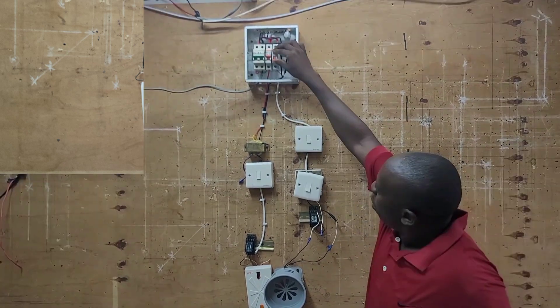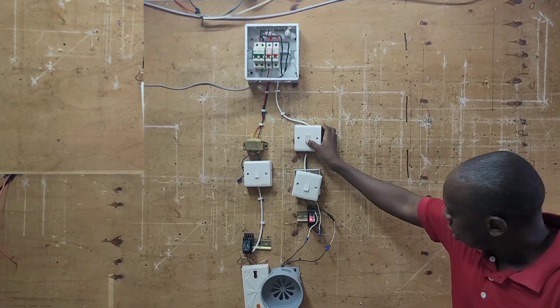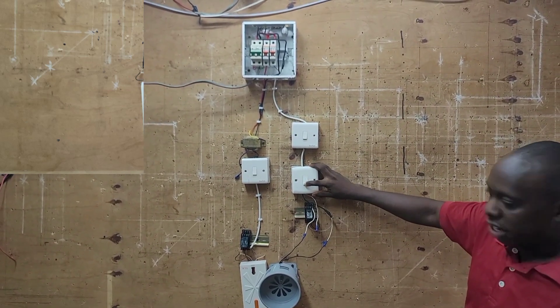Now, to power our siren, let's power on our MCB first. We can power our siren from this point. We can also power our siren from this other point.